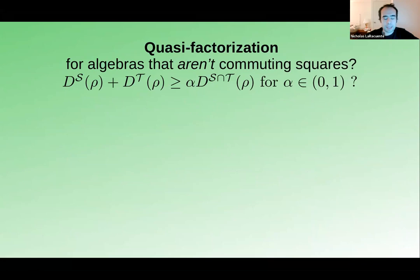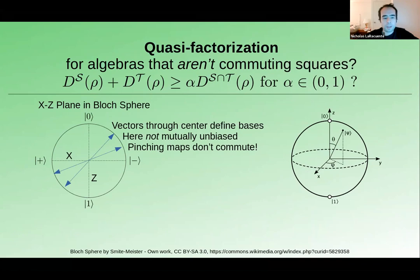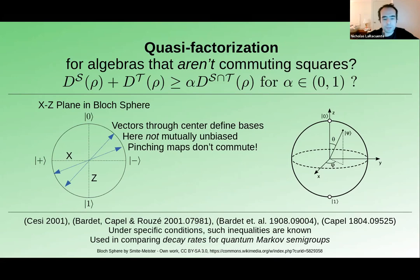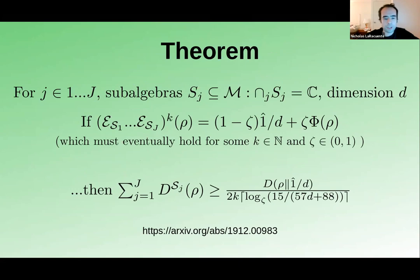What's notable is this commuting square condition: the conditional expectations must commute. Otherwise this inequality fails. But we can ask if there's a weaker inequality by putting some constant on the right-hand side when this condition doesn't hold. For example, with a single qubit, we could look at two axes through the Bloch sphere center that are neither parallel nor perpendicular, defining bases with non-commuting pinching maps.